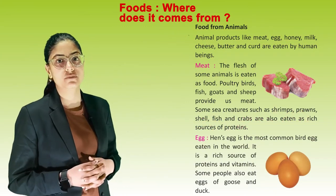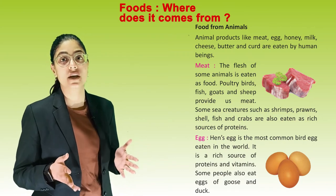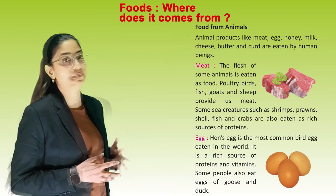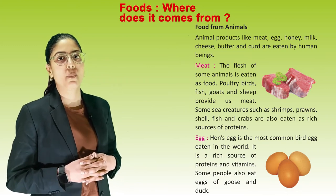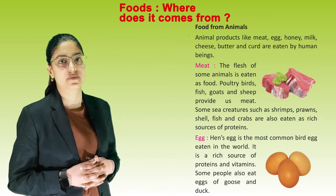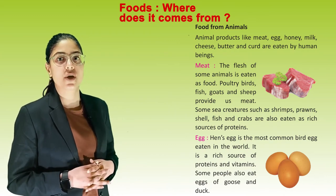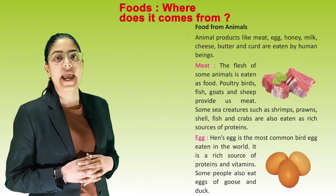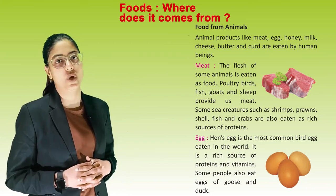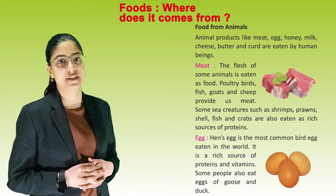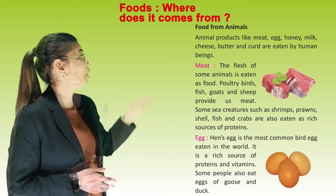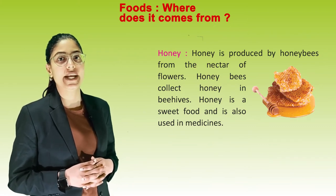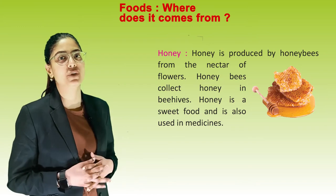Food from animals. Animal products like meat, egg, honey, milk, cheese, butter and curd are eaten by human beings. Meat: the flesh of some animals is eaten as food. Poultry birds, fish, goats and sheep provide us meat. Sea creatures such as shrimps, prawns, shellfish and crabs are also eaten as a rich source of protein. Egg: hen's egg is the most common bird's egg eaten in the world; it is a rich source of protein and vitamins. Some people also eat eggs of goose and duck. Honey: honey is produced by honeybees from the nectar of flowers. Honeybees collect honey in beehives. Honey is a sweet food and is also used in medicines.